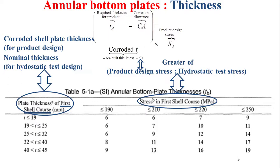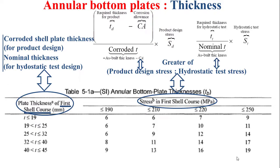The as-built thickness is related to material availability. The hydrostatic test stress is determined using the formula at the right of this slide, as a function of the required thickness under hydrostatic test conditions, the as-built thickness, and the hydrostatic test stress.